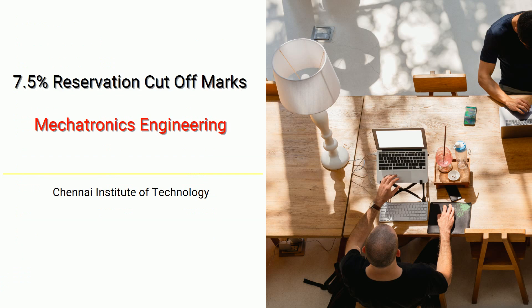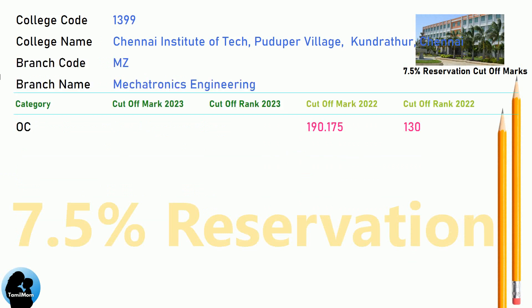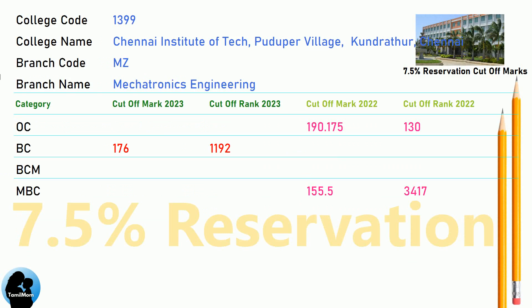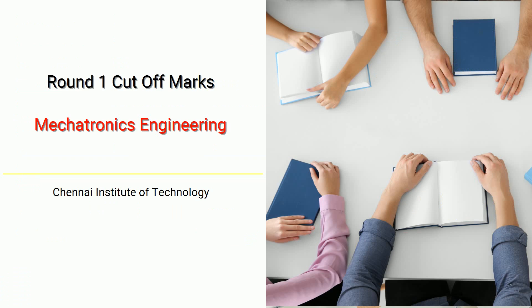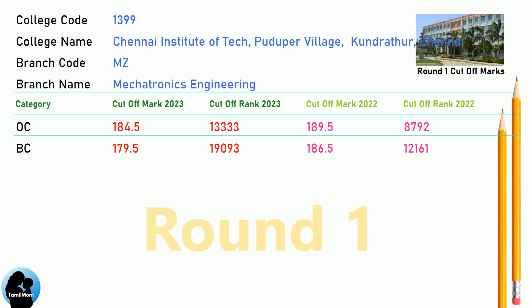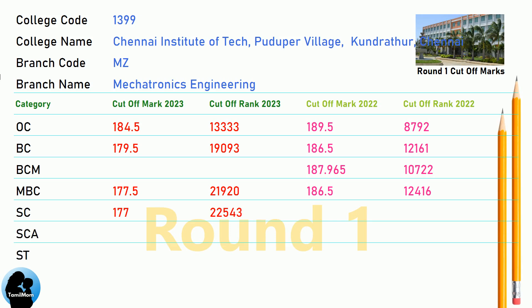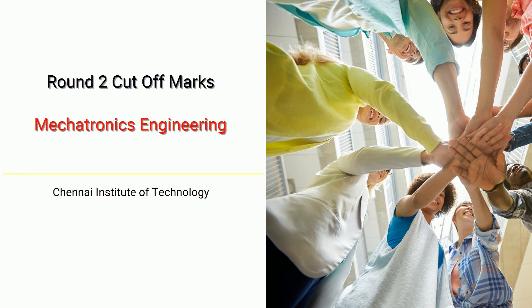DNA Cut-off for Chennai Institute of Technology in Mechatronics Engineering. DNA 7.5 Reservation Cut-off for Chennai Institute of Technology in Mechatronics Engineering. DNA Round 1 Cut-off for Chennai Institute of Technology in Mechatronics Engineering. DNA Round 2 Cut-off for Chennai Institute of Technology in Mechatronics Engineering.